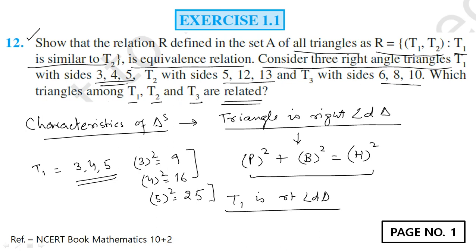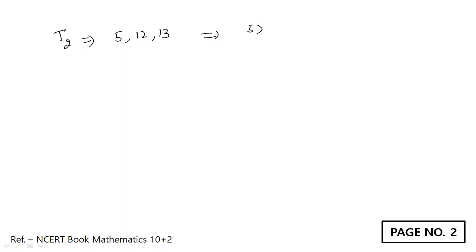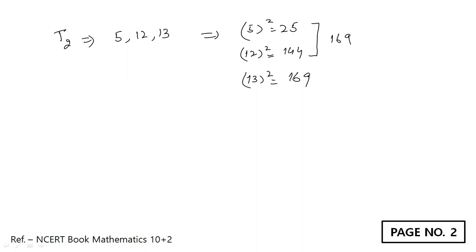What about the second triangle T2? The sides are 5, 12, and 13. Square of 5 is 25, square of 12 is 144, and square of 13 is 169. 25 plus 144 equals 169. This means T2 is also a right-angled triangle. So both T1 and T2 are right-angled triangles.